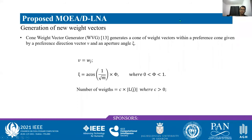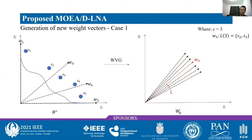In the third step, MOEA/D-LNA creates weight vectors using a method called the Cone Weight Vector Generator, or WVG for short. In this method, a cone of weights is generated by a preference direction vector v and an aperture angle. For all local neighborhoods with size bigger than 1, a cone of weight vectors is generated where the preference direction is the corresponding weight vector, with aperture angle given by a fraction of the angle of the hyperdiagonal. The total number of weight vectors generated per cone equals the local neighborhood size times a constant C, composing the set WG. In case 1, W3 was the only weight vector with a local neighborhood larger than 1, so only one cone is generated. With C equals 3, the total weights generated in that cone will be 6.